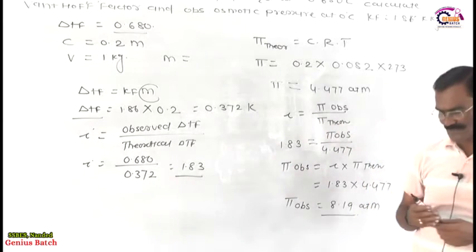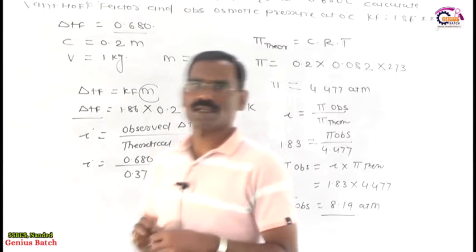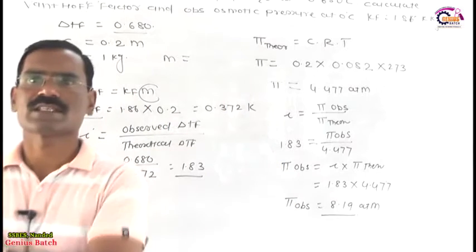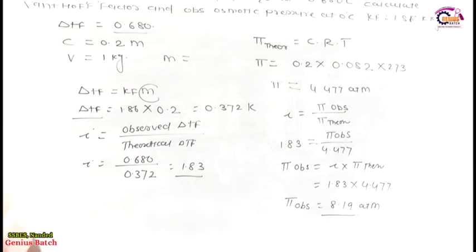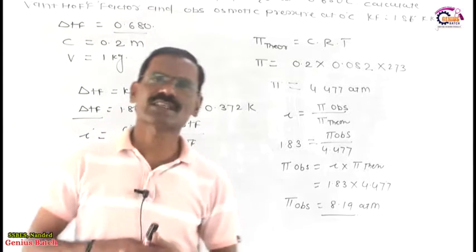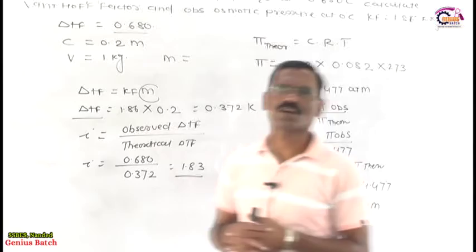So dear friends, these are very simple concepts. By using this we calculate such things. As per my idea you do not have any problem related to this. The 0.2 molar aqueous solution of KCl problem — we calculated the van't Hoff factor and observed osmotic pressure at 0 degree Celsius. This is a very simple way to calculate all the problems.